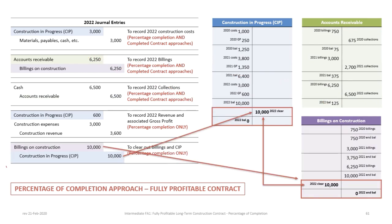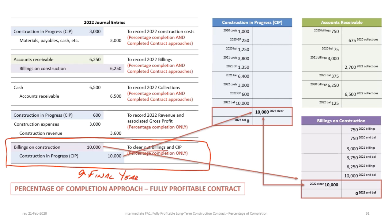Because the contract is now complete, there is a special final journal entry to clear out the billings and Construction in Progress accounts. Since both balances equal $10 million, we debit Billings on Construction and credit Construction in Progress for $10 million each, leaving zero balances. The completed project no longer appears on the balance sheet — only the outstanding accounts receivable related to the project remains.